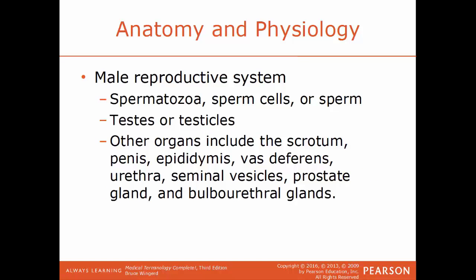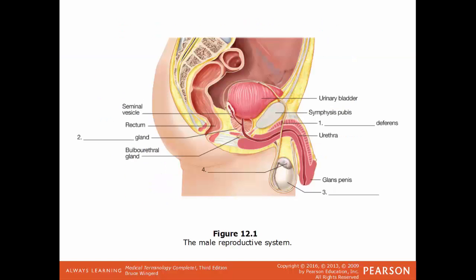Basic structures of the male reproductive system include spermatozoa, which is the formal name for the sperm cells, and the testes, also known as the testicles. Other organs include the scrotum, the penis, the epididymis, vas deferens, urethra, seminal vesicles, the prostate glands, and the bulbal urethral glands.